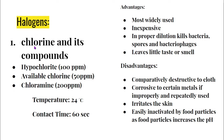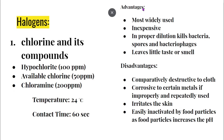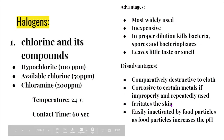Now we will discuss halogens. The first halogen sanitizer is chlorine and its compounds. For this, we use hypochlorite, available chlorine, or chloramine at specified concentrations in parts per million. The temperature used is 24 degrees Celsius and the contact time is 60 seconds. The advantage is that they are most widely used, inexpensive, and in proper dilution they kill bacteria, spores, and bacteriophages, leaving little taste or smell. The disadvantage is they are comparatively destructive to cloth.